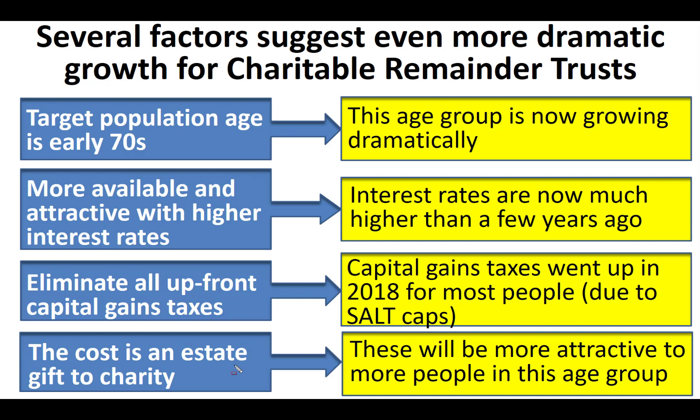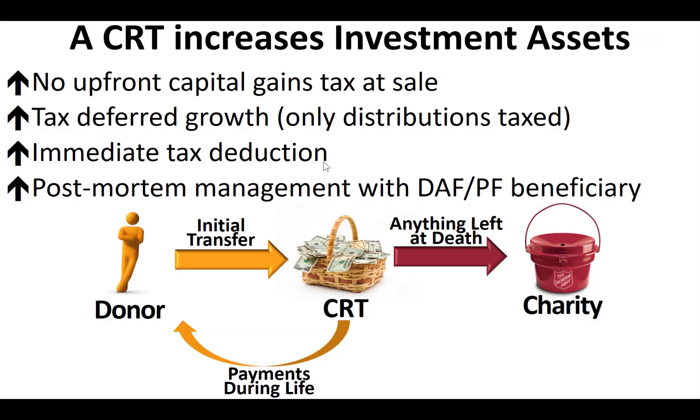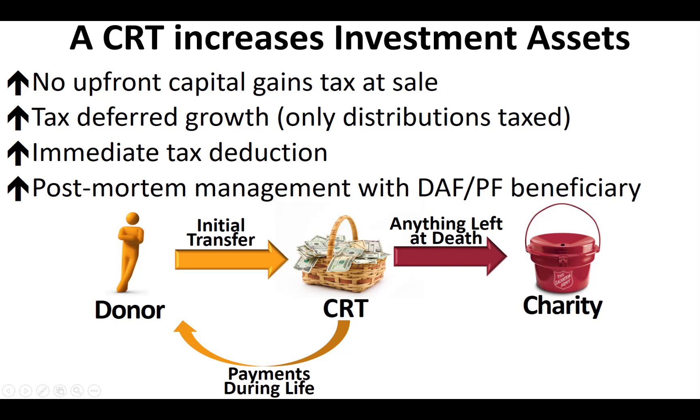The cost of a charitable remainder trust is essentially having to make a charitable gift at the end of life — whatever's left over goes to charity. It's important to note that the upcoming demographics for this age group include a higher level of childlessness and a higher level of education, both of which predict interest in and actual use of charitable bequests. In other words, the bottom-line cost of this technique is becoming more attractive to the upcoming population that reaches the key age for making this kind of transaction, because of their demographic characteristics.